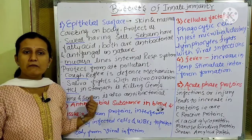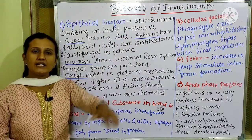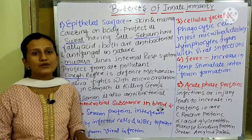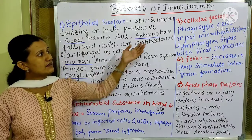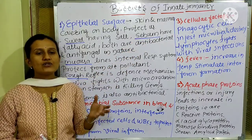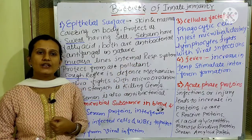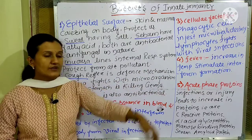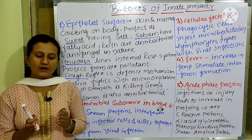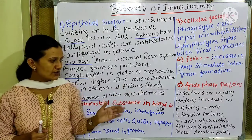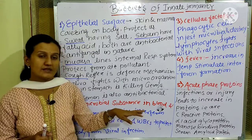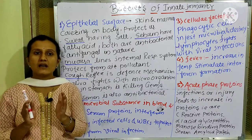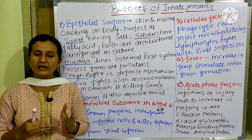All these barriers of innate immunity have antimicrobial properties. The substances in blood and tissue — such as interferons and serum proteins (activated and inactivated proteins) — act as barriers. In the cellular factor, we have lymphocytes and phagocytic cells: macrophages and microphages. Body temperature acts as a stimulator. Acute phase proteins (APPs) such as CRP, mannose-binding protein, and serum amyloid protein are different types of APPs which act as barriers of innate immunity and help build up innate immunity.